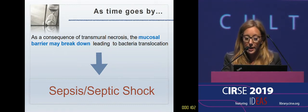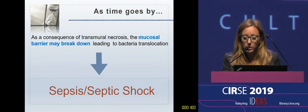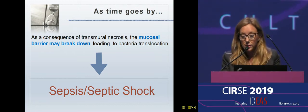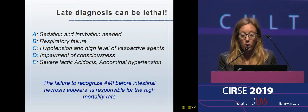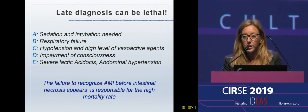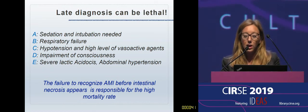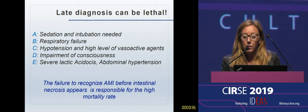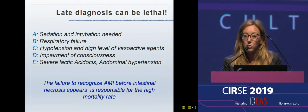If ischemia is not detected, as a consequence of transmural necrosis, the mucosal barrier may break down, leading to bacterial translocation and then to sepsis and septic shock. At this point, the patient is very sick, often in the intensive care unit, sedated and mechanically ventilated due to respiratory failure. High levels of vasoactive agents are required to treat hypotension. We can also find severe lactic acidosis, abdominal hypertension, renal failure, and multi-organ dysfunction. At this stage, mortality is really very high.